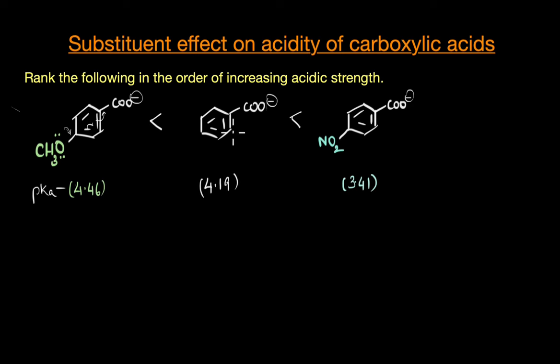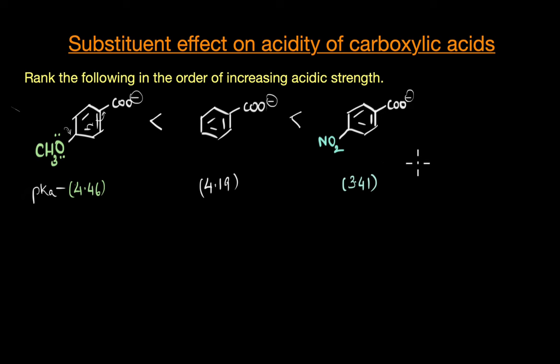So this is the correct increasing order of acidic strength: paramethoxybenzoic acid is the least acidic, followed by benzoic acid, and paranitrobenzoic acid is the most acidic.